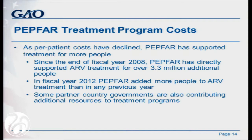The result has led to PEPFAR being able to support more people on treatment. These are very well-published gains that the program has reported. Since the end of fiscal year 2008, PEPFAR has directly supported ARV treatment for over 3.3 million additional people. In fiscal year 2012, it added more people to ARV treatment than in any previous year. This goes to the 5.1 million people on treatment in the last publication.